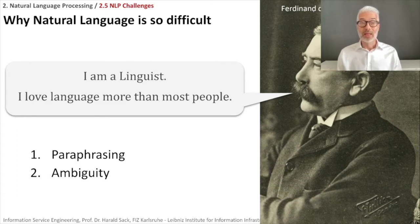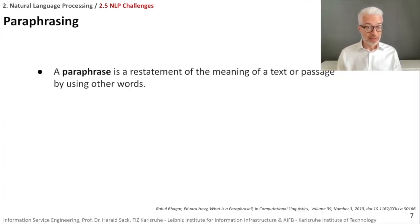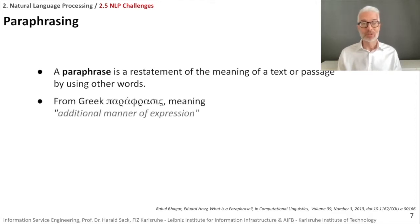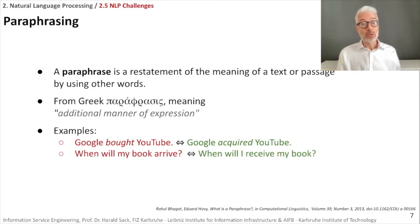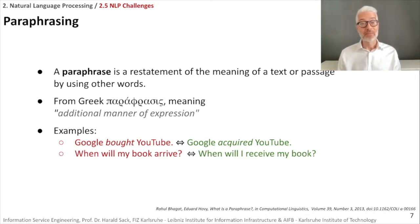Let's first have a look at paraphrasing. A paraphrase is a restatement of the meaning of a text or passage simply by using other words — this comes from Greek, like most expressions in linguistics. Paraphrasis means 'additional manner of expression.' Examples: 'Google bought YouTube' or 'Google acquired YouTube' — here you only use another verb with more or less the same meaning. 'When will my book arrive?' or 'When will I receive my book?' — in the first sentence the book is the subject; in the second, I am the subject.